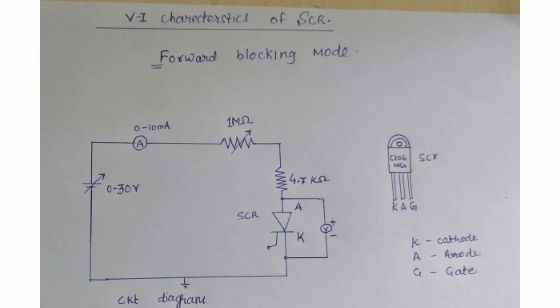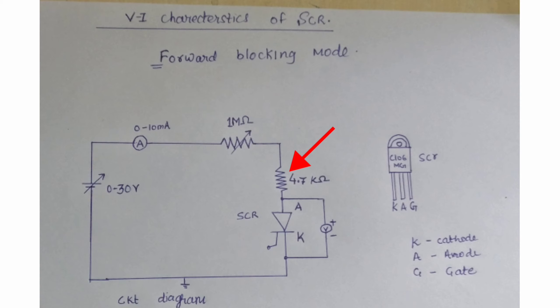First of all we are going to perform forward blocking mode. As you can see, we have a power supply of 0 to 30 volts. After that we have connected a 0 to 10 milliampere range ammeter, and a potentiometer in series with the ammeter with a range of 1 mega ohm. After that we have connected a load resistance of 4.7 kilo ohms, and we have connected our SCR.